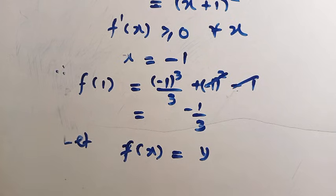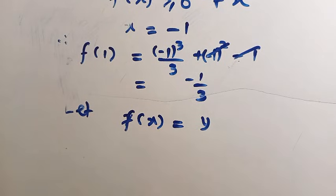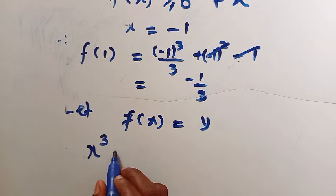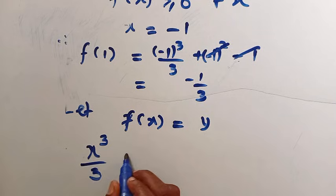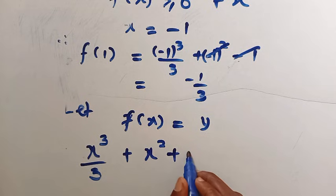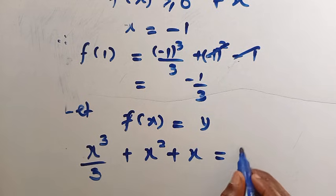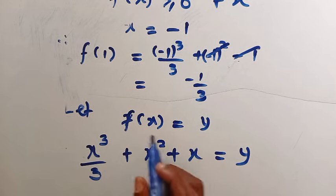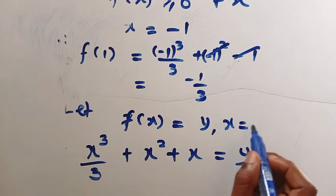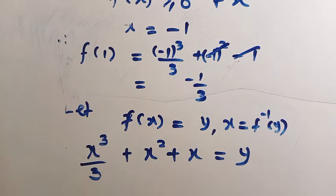f of x to be equals y. So by letting this equals to y, then we have x raised to power of 3 divided by 3 plus x squared plus x equals y. And we should not forget that our x will be equals f inverse of y.